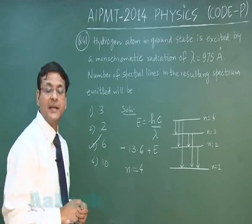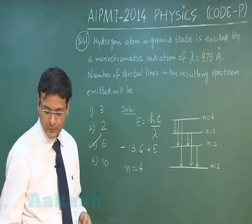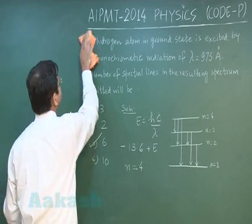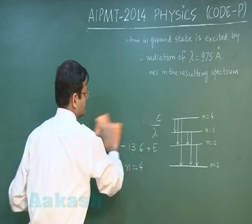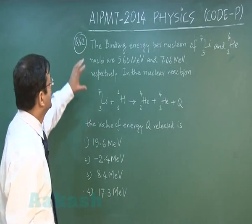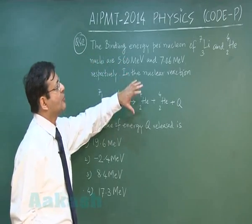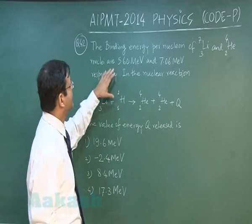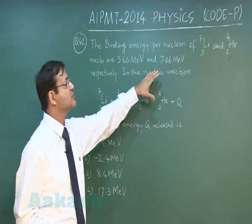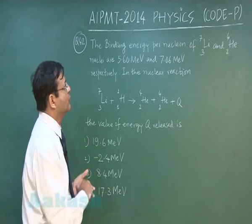Now let me explain next question that is question 42. In the next question that is question 42, the binding energy per nucleon of lithium and helium nuclei are 5.60 mega electron volt and 7.06 mega electron volt respectively has been given to you.